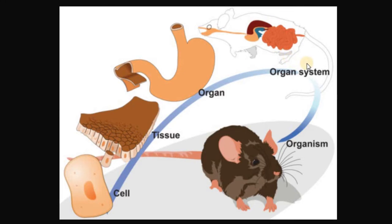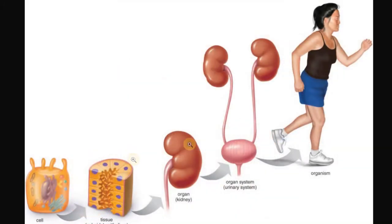And a group of systems — the digestive system, the respiratory system, the circulatory system, and so on — make the organism, in this case a rat. We have the same for humans.